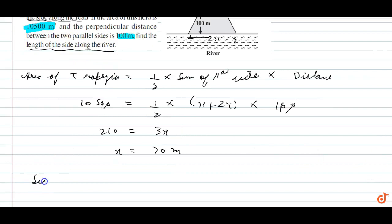Along the river, side along the river is 2x equals 2 into 70 equals 140 meters. 140 meters.